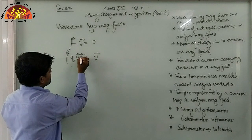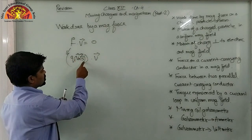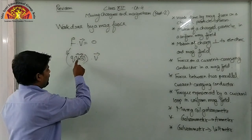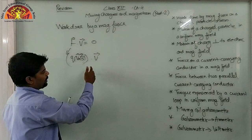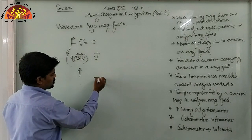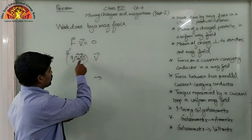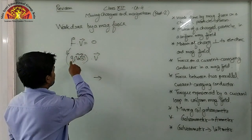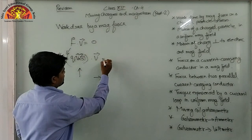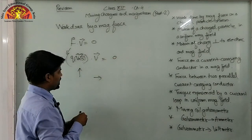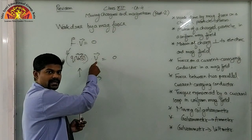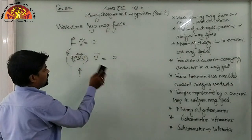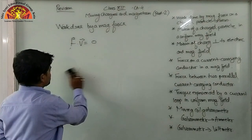Now, V cross V — the resultant of V cross V will be perpendicular to the plane of V and V. So the angle between the resultant and V will be 90 degrees. That means the dot product result will be 0, because cos 90 equals 0. So we have to keep in mind that F dot V equals to 0, and we follow this going forward.